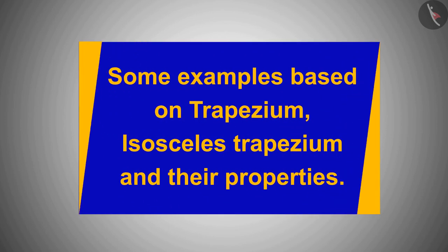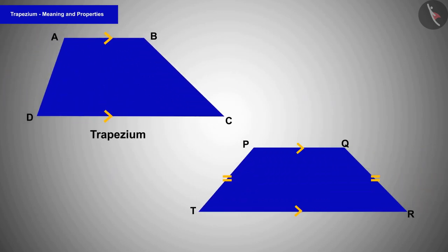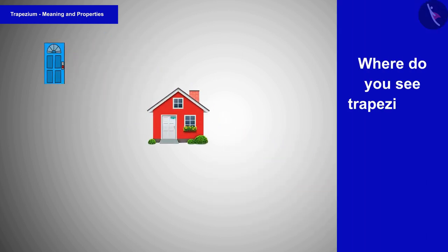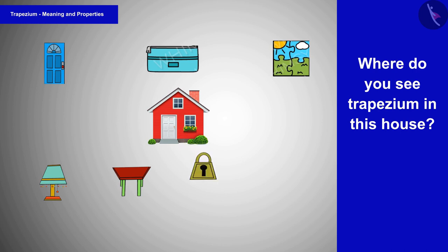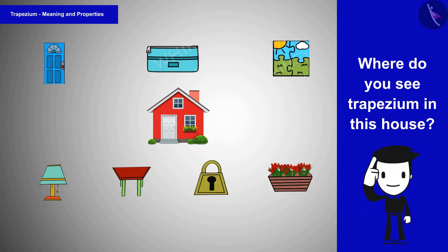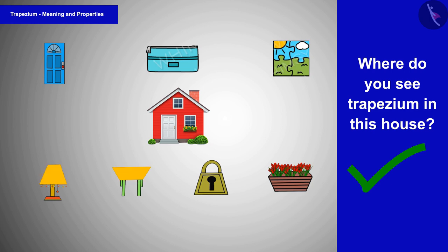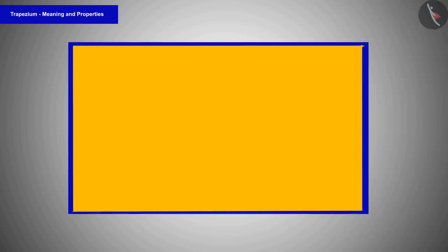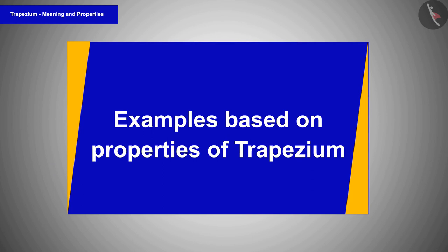Welcome! In this video we will see some examples based on trapezium, isosceles trapezium, and their properties. Now that you are acquainted with the definitions, let us play a game — do you see a trapezium in this house? Pause the video and try. Well done! In this house we can see trapeziums in the table, table lamp, lock, and pot.